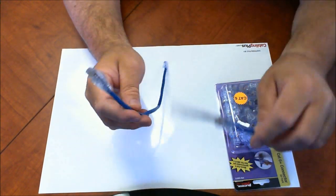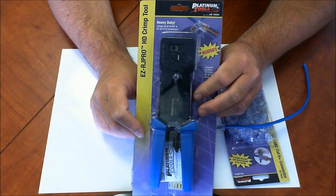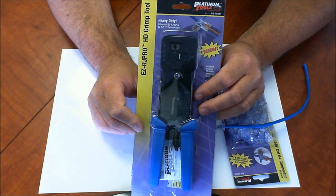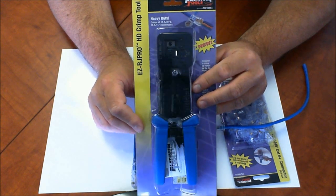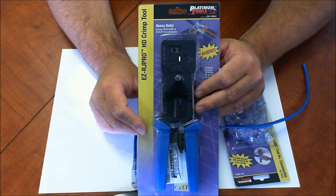To terminate these, you'll use the Platinum Tools HD RJ Pro HD crimp tool, part number 100054. I'm going to make a video on this tool in a few moments, so you can check the channel for that.